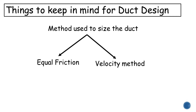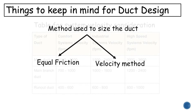The equal friction method keeps the airflow pressure drop even throughout the ducts. The velocity method controls how fast the air moves in the ducts.